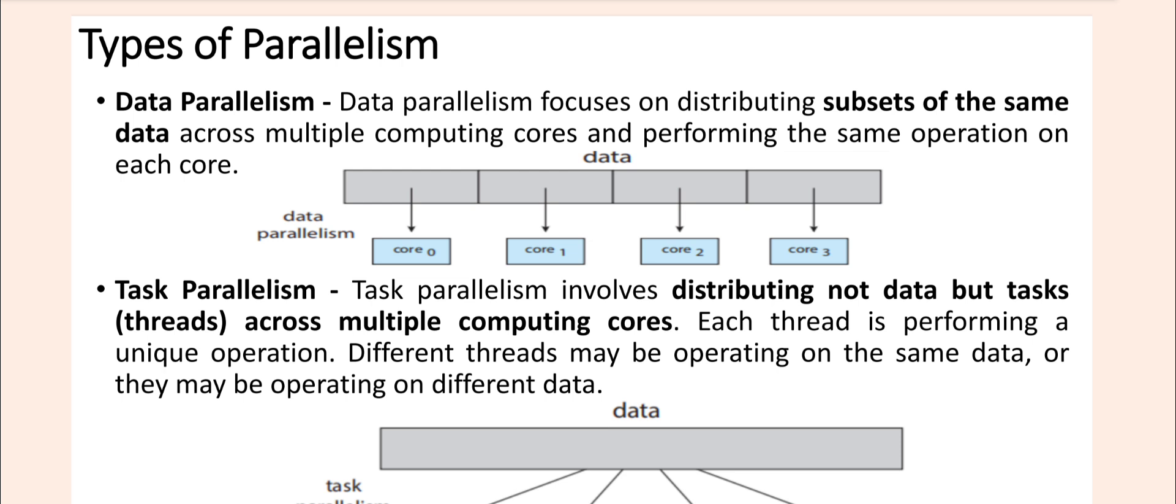Data parallelism means what? You split the same data into smaller parts. Same data into smaller parts and perform same task on each part at the same time. See, in data parallelism, see the same operations are performing on each core. Same operation. Core 0, core 1, core 2, core 3 all are performing the same operation.